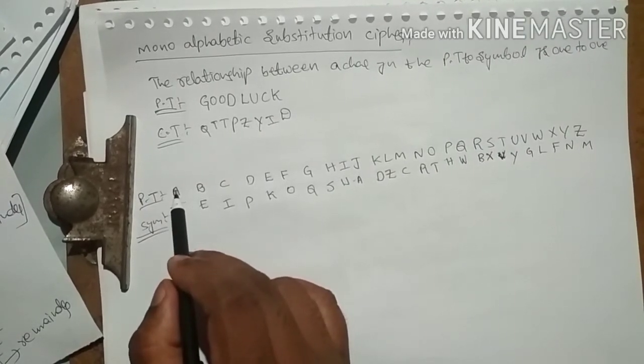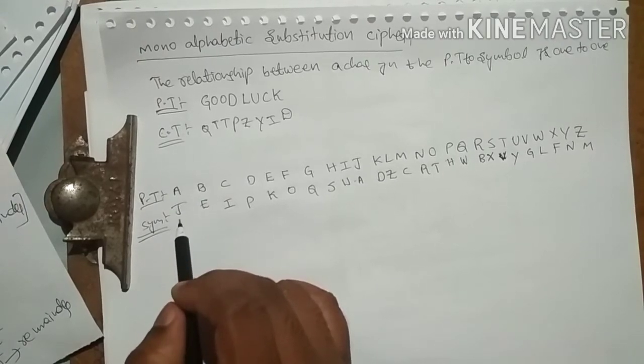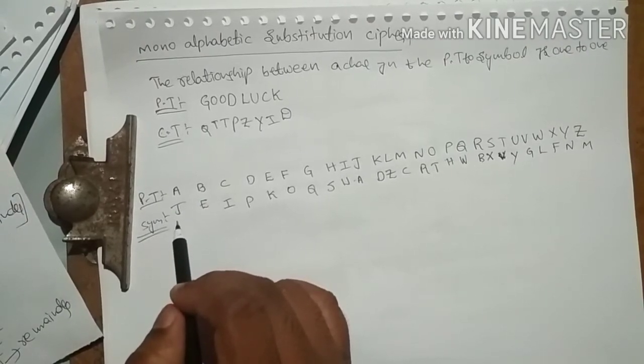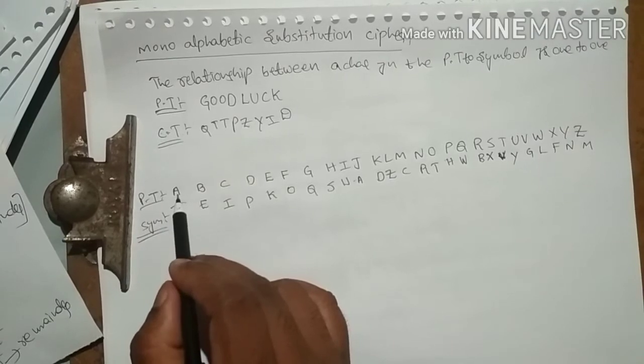The relationship between the plaintext characters to the symbols is one to one. That means for every each one and only one element, it has only one element. For example, A has only J.